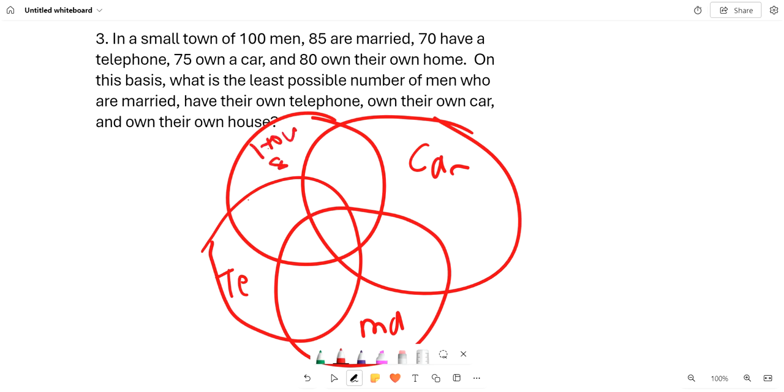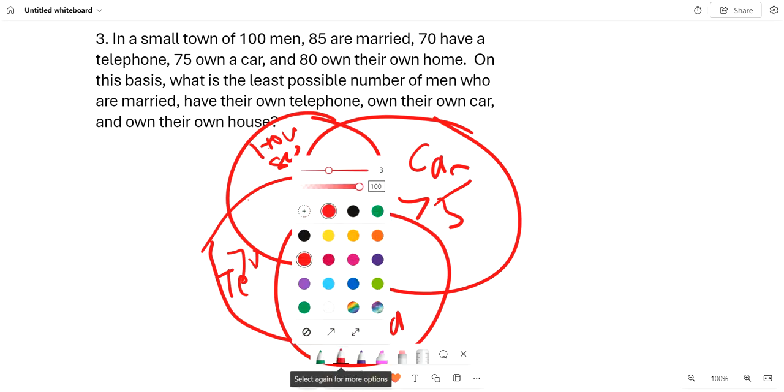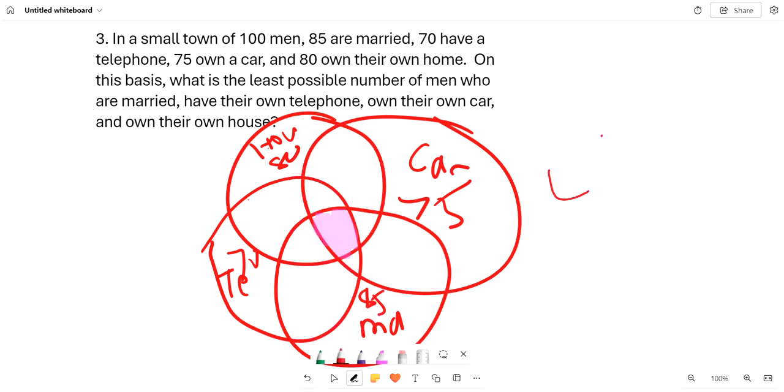We know there's 80 in the house, 75 with the car, 70 with the telephone, and 85 that are married. So that means that we're trying to find what's in this box because it contains all four.